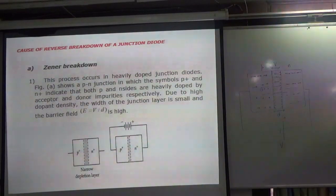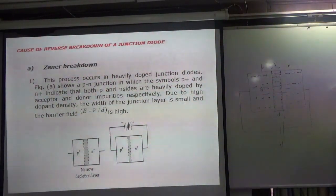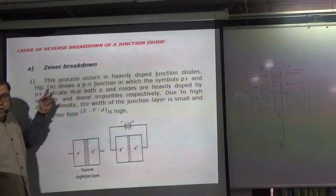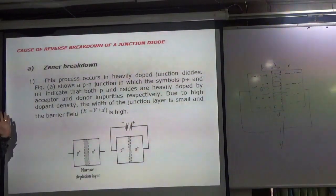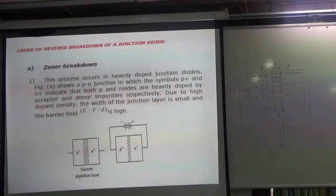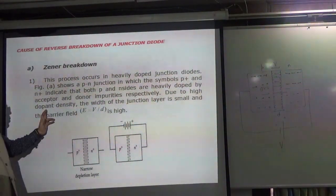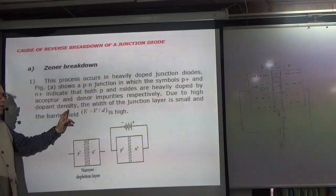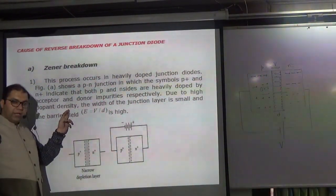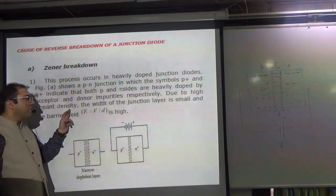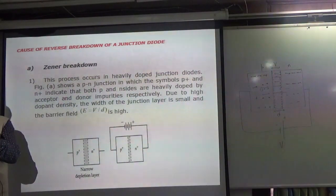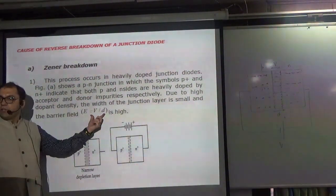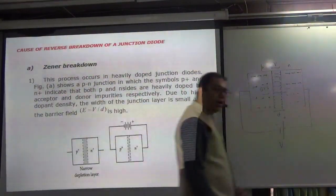When the breakdown is caused by heavy doping, it is called Zener breakdown. This process occurs in heavily doped junction diodes. Due to high doping density, P and N both have high doping density, so the width of the junction depletion layer is small — D is small — and the barrier electric field E is high. Small D means high E.